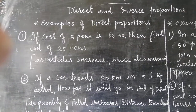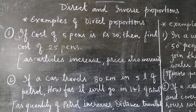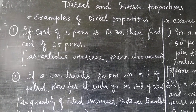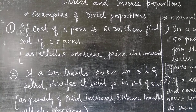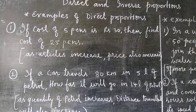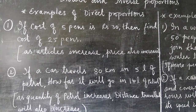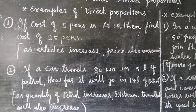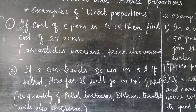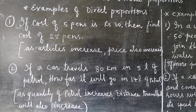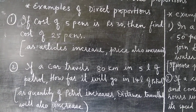The first example: if the cost of 5 pens is rupees 30, find the cost of 25 pens. If you buy 5 pens the cost is 30. If you buy more pens — say 25 — the cost will obviously be more. Means if you buy more pens the cost will be more, and if you buy less pens the cost will be less.